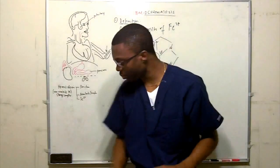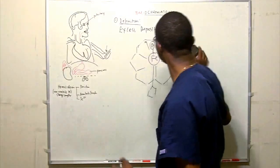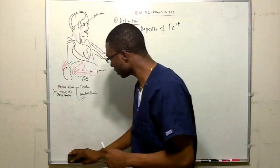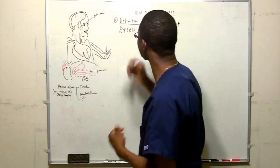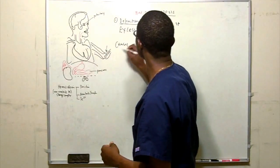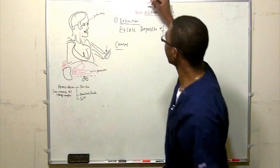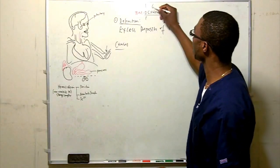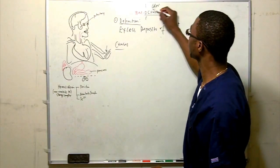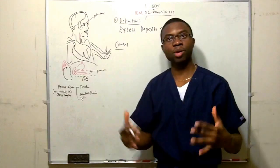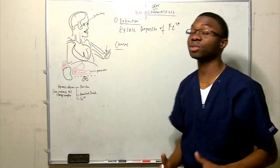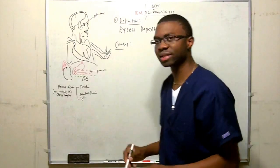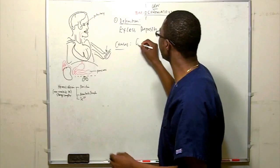Breaking down the word: heme from hemoglobin, chrome means color, chromatosis refers to iron deposition — excess amount of iron. What really causes this? It's a genetic mutation.